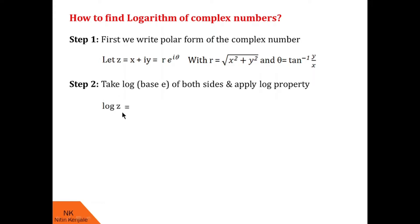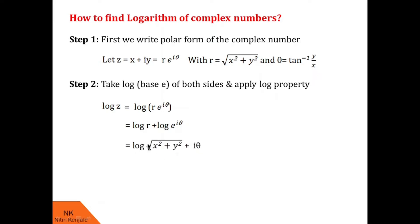On the LHS we get log(z), and on the RHS we get log(r·e^(iθ)). Treating this as log(a·b), we apply log(a·b) = log(a) + log(b) to get log(r) + log(e^(iθ)). Since r = √(x² + y²), the first term becomes log(√(x² + y²)), and since the log is base e, log(e^(iθ)) becomes just iθ. Now √(x² + y²) = (x² + y²)^(1/2), which is of the form a^b, so using log(a^b) = b·log(a), we get (1/2)·log(x² + y²) + iθ.